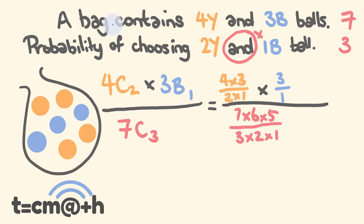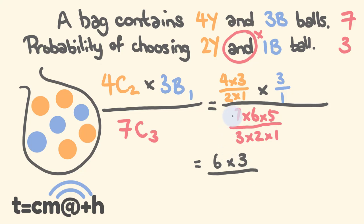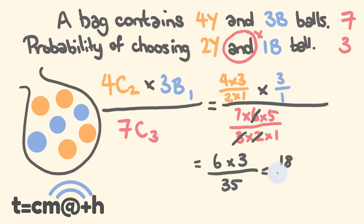Now we can solve this. 4×3 = 12, divided by 2 = 6. Multiplied by 3 over 1 = 3. For the denominator: 7×6×5 over 3×2×1 — since 3×2=6 cancels with the 6, we get 7×5 = 35. So the numerator is 6×3 = 18, and the answer is 18 over 35.